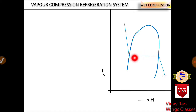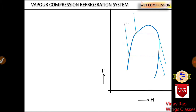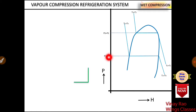In the P-H chart, constant temperature lines move in this manner — for example, if it is 30 degrees Celsius, then at each and every point on that line the temperature is 30 degrees Celsius. These are constant temperature lines. These are constant pressure lines, already explained in the P-H chart for R-12 refrigerant in previous videos.